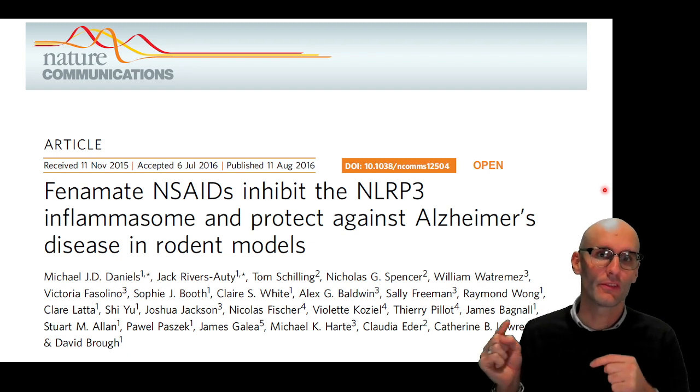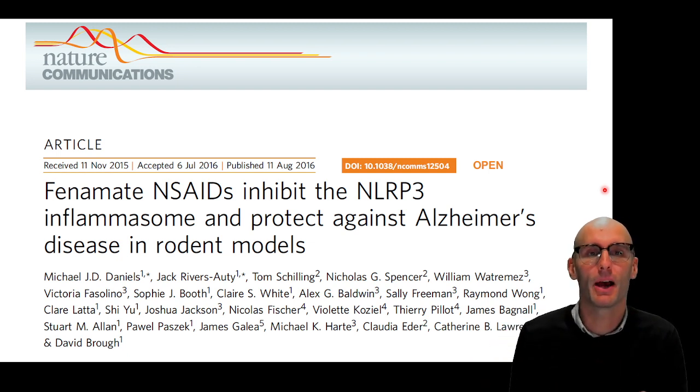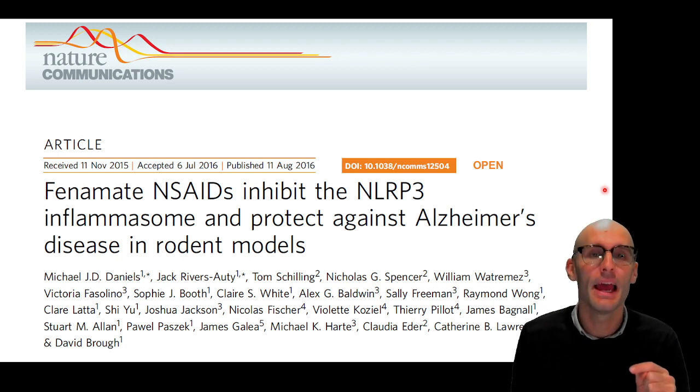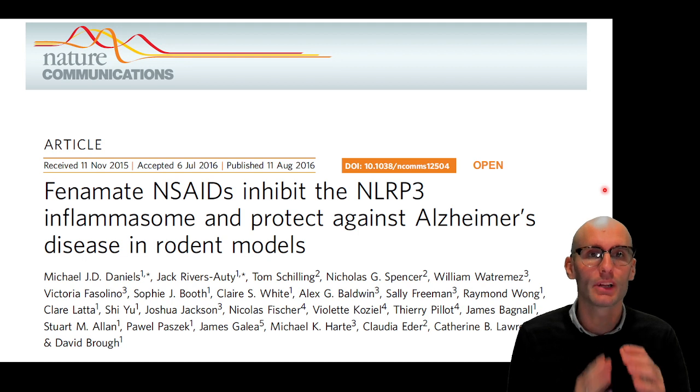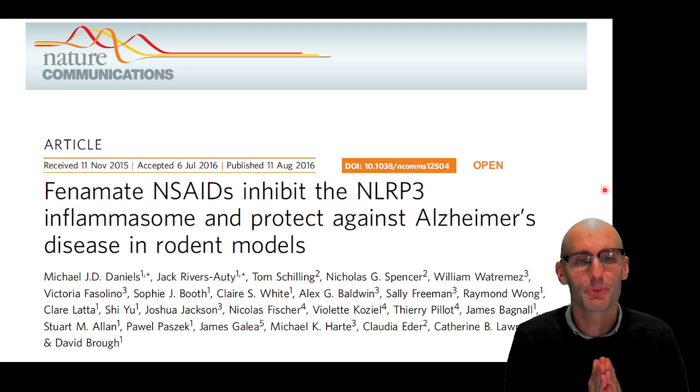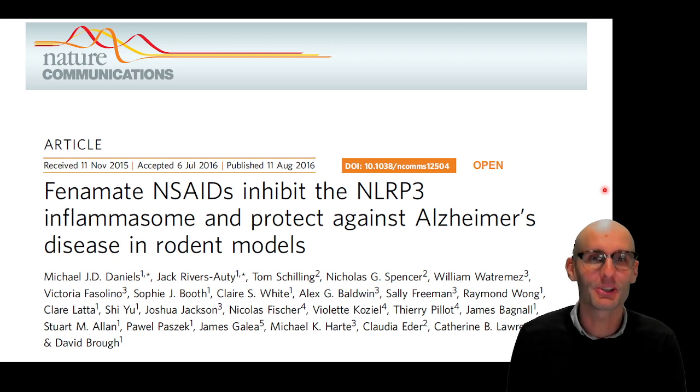Now in the previous few videos, I've been building up to this paper. I've been explaining the theoretical background behind this paper, as well as some of the techniques that go into this paper. And in the next few videos, I'm really going to thoroughly break down this paper. So the title of the paper is Fenamate NSAIDs Inhibit the NLRP3 Inflammasome and Protect Against Alzheimer's Disease in Rodent Models. If all of that is gibberish, please go back and watch the previous videos, because you should, just from the title, know where this is going.